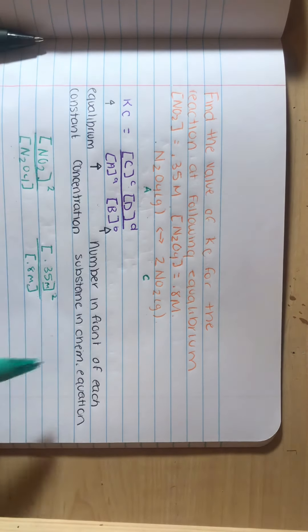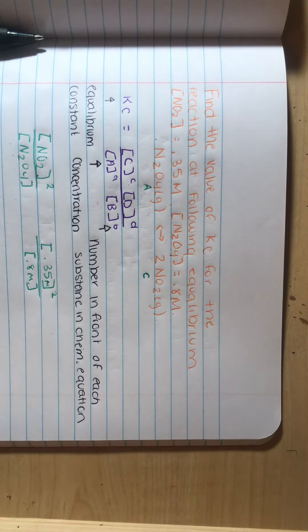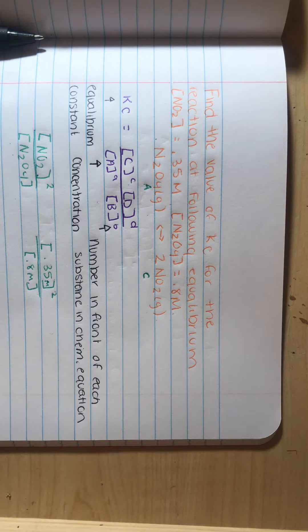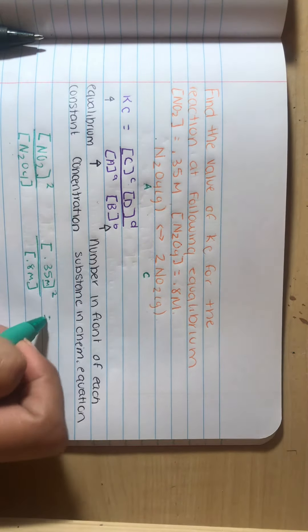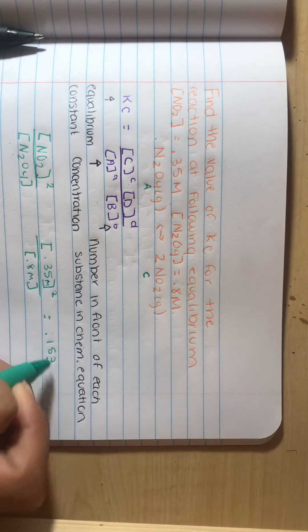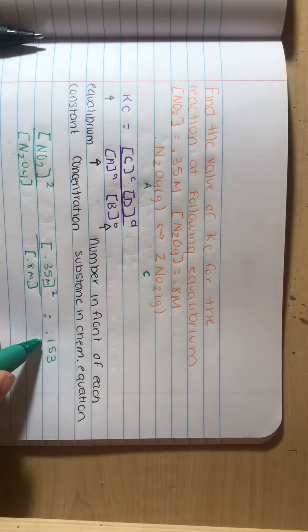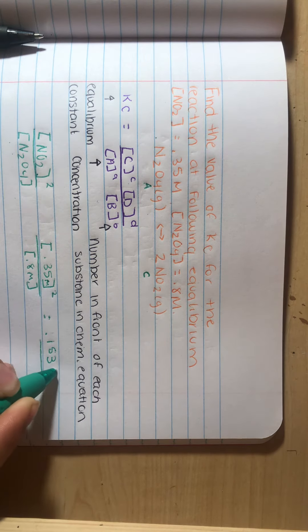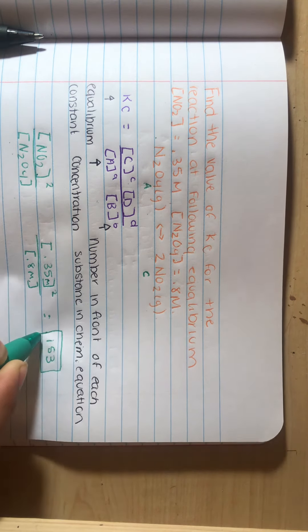Okay, now once you enter this into your calculator, you're going to get a total of 0.153. And this will be the value of Kc for the following equilibrium reaction.